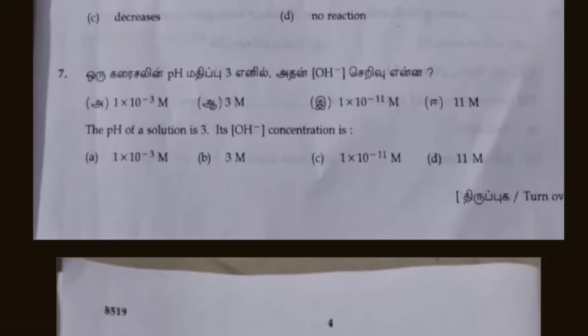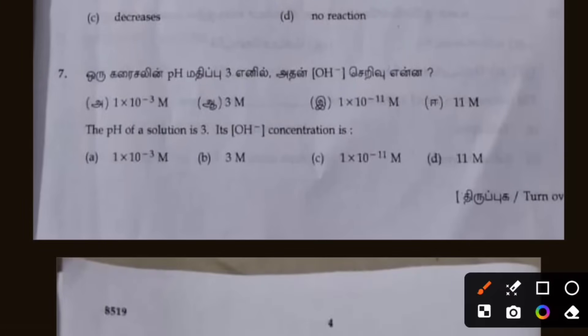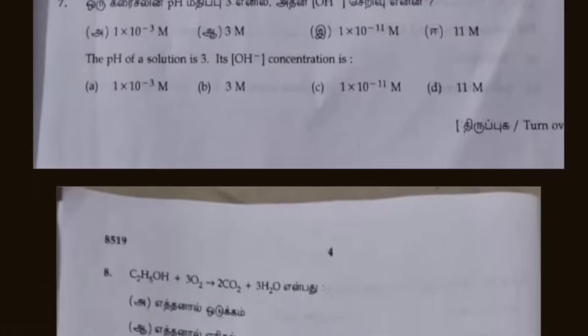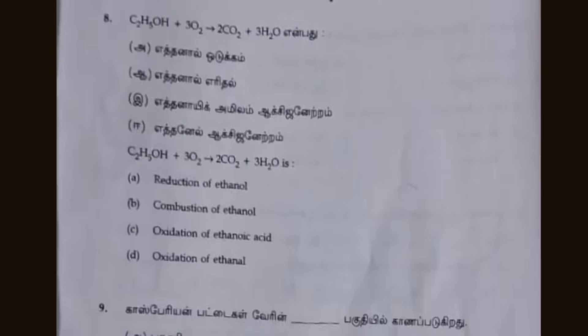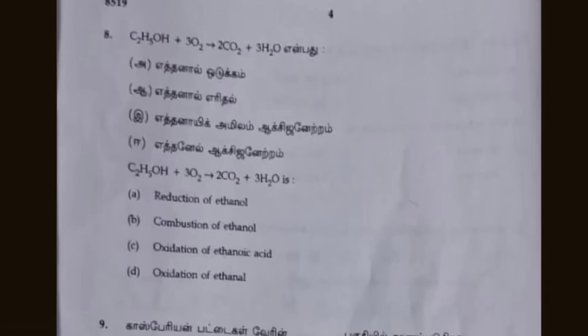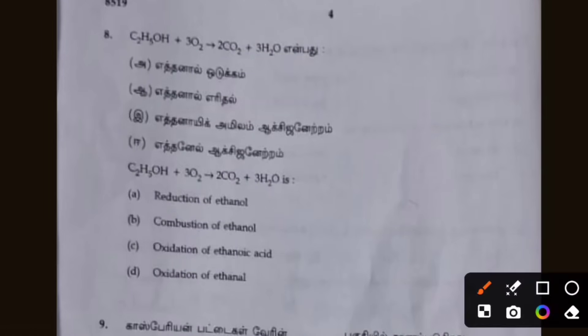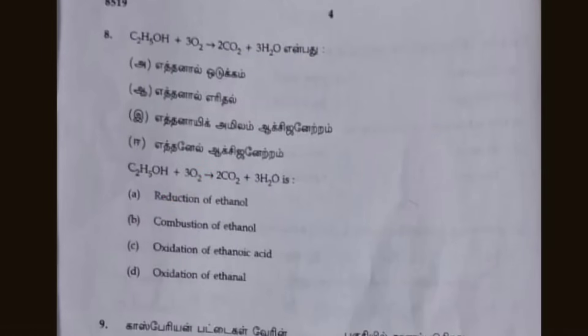For the 7th one, the pH of the solution is 3. Option C: 1 multiplied by 10 to the power of -11. That's the answer. For the 8th one, answer is B — combination of ethanol. That's the answer.